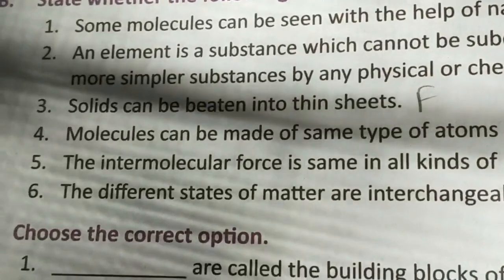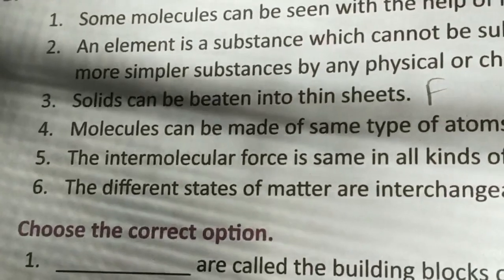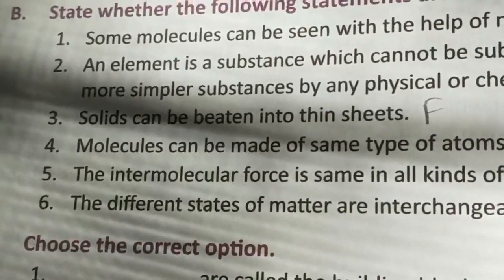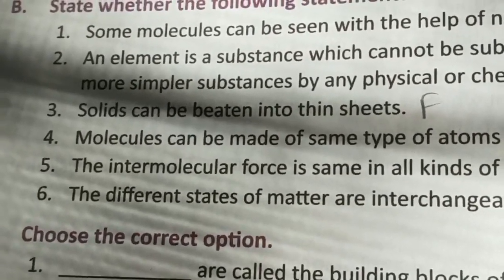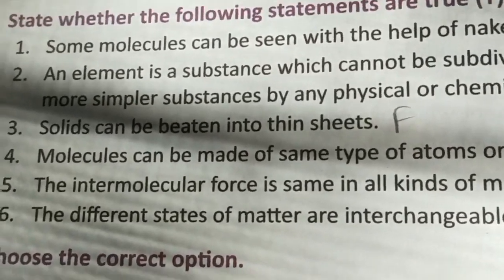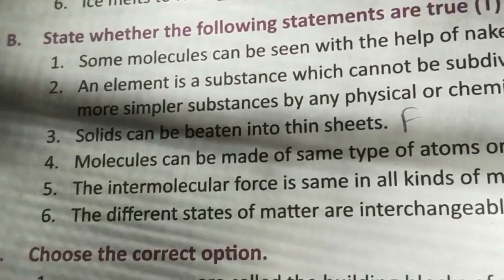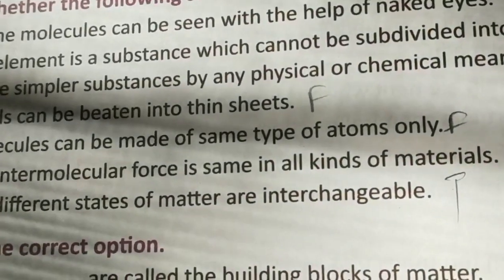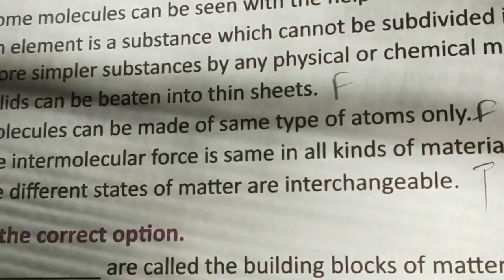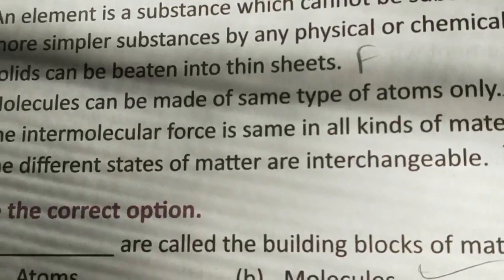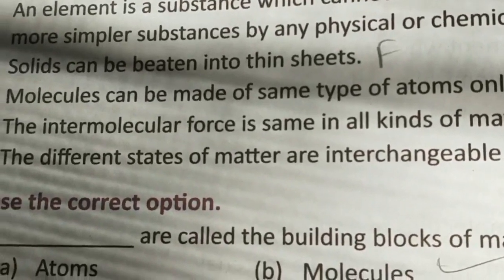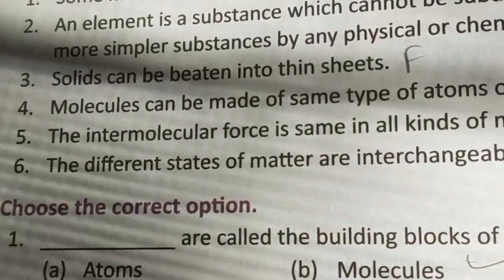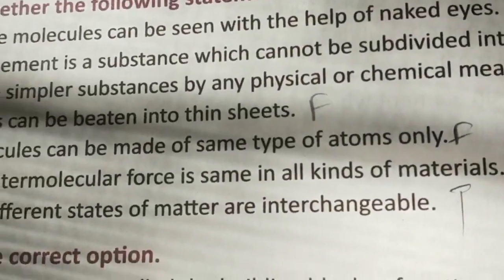Third: solids can be beaten into thin sheets — that's false; only metals can be beaten into thin sheets because metals are malleable and ductile. Fourth: molecules can be made of the same types of atoms only — that's false; compound molecules are made of different types of atoms. Fifth: the different states of matter are interchangeable — that's true.